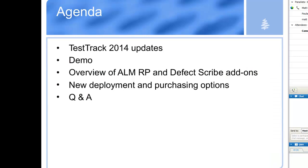Today's event: we're going to start off with Paula talking about the Test Track 2014 updates, the new release, and then she's going to do a walkthrough demonstration of the new capabilities. Then Jeff Amphar is going to talk about ALMRP and Defect Scribe — two free add-ons to Test Track to help with dashboards, reporting, and manual testing. Lastly, Jeff will talk about some new deployment and licensing options being announced with the release today.